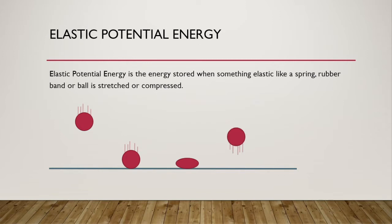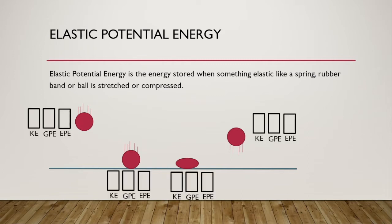If we think about this in terms of energy and energy bins, in the beginning at point A, the ball has some kinetic energy because it's moving, and also some gravitational potential energy. The ball is not stretched or compressed at point A — we can see that the ball is fully round — so we have some KE and GPE, but no EPE.